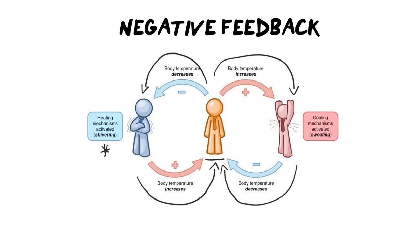Comparing to the cattle example of positive feedback: to help those cattle, we'd introduce negative feedback — perhaps a herdsman who calms them down, bringing them back to norm, so they don't continue to overpanic the herd in an endless loop. Negative feedback can reduce something like body temperature, or increase it — the key is that it always returns the system to the norm.